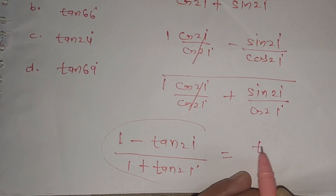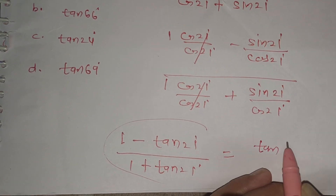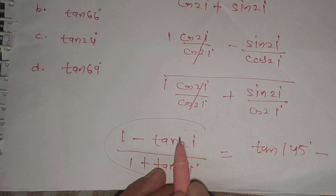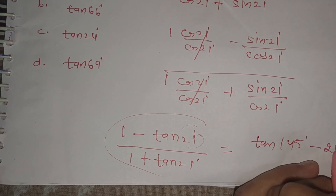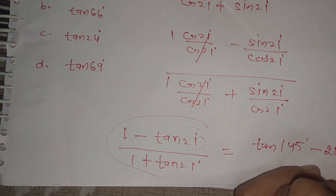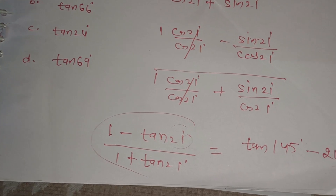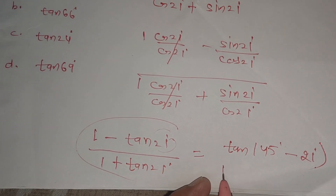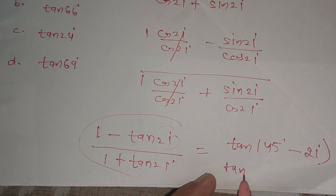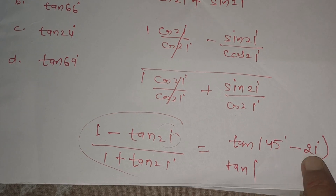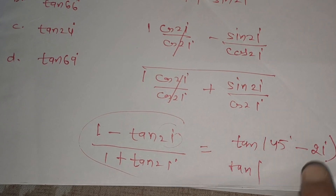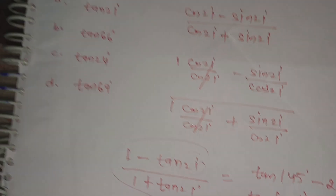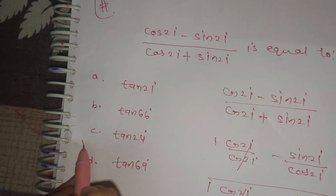Look at the formula: tan(45 degree minus angle). So 45 degree minus 21 degree. Using tan 45 degree minus tan 21 degree formula gives tan 24 degree. So option C is the answer. Thank you.